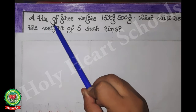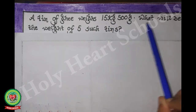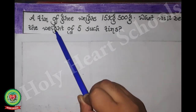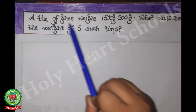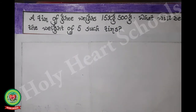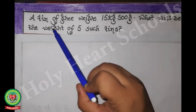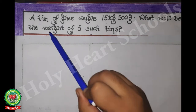A tin of ghee weighs 15 kilograms 500 grams. What will be the weight of five such tins? The weight of one tin is given and we have to find out the weight of five tins. While doing these types of sums, first of all we will see which two things are given in the statement.